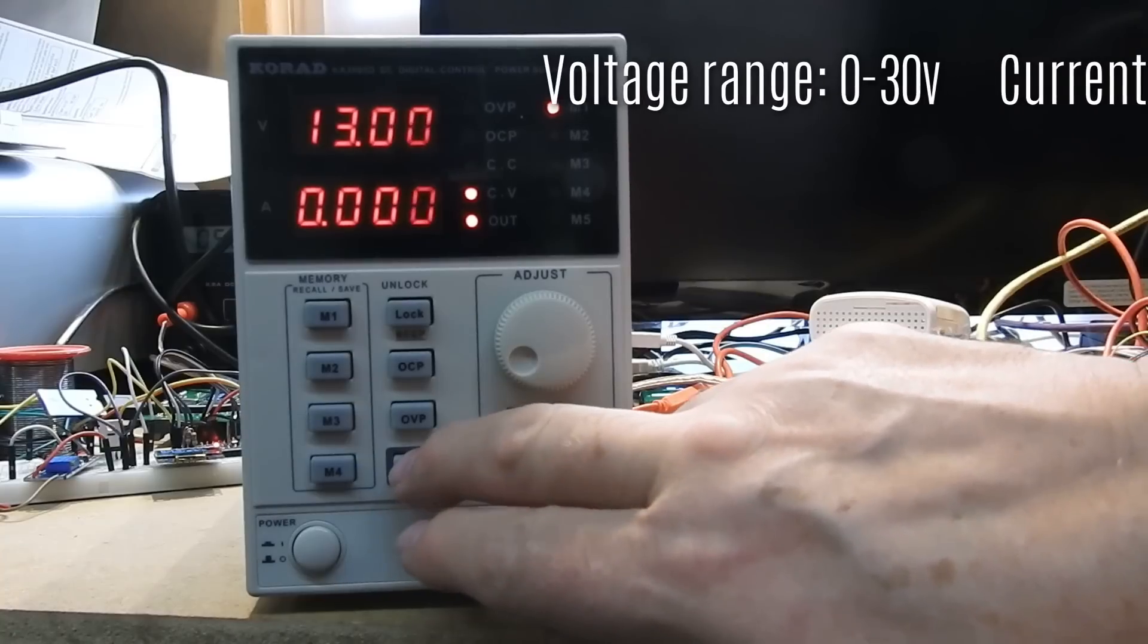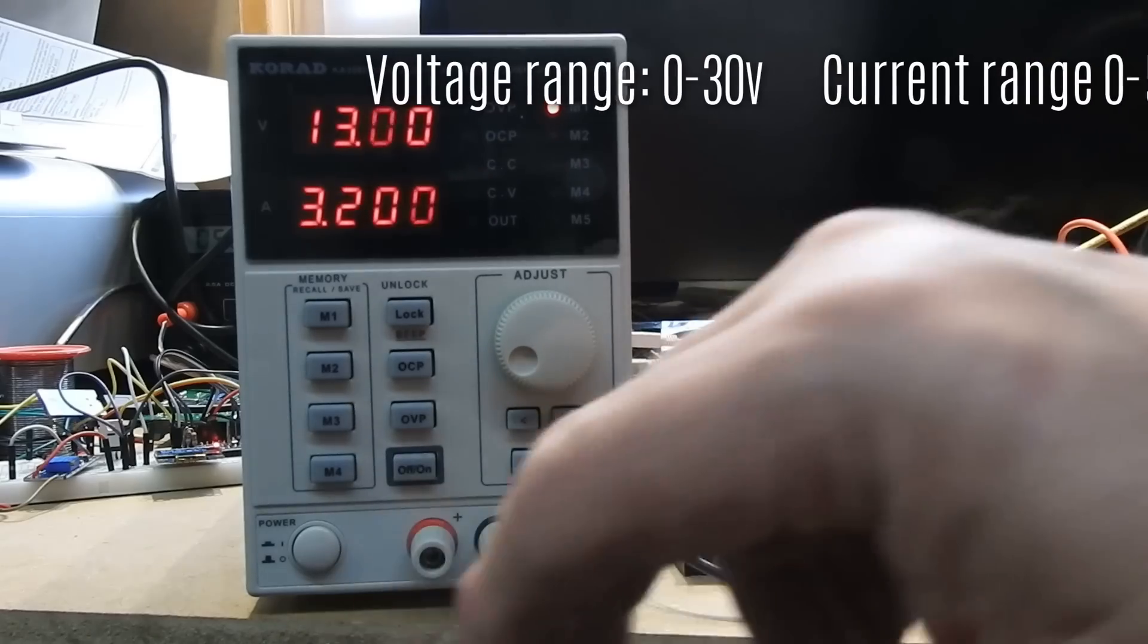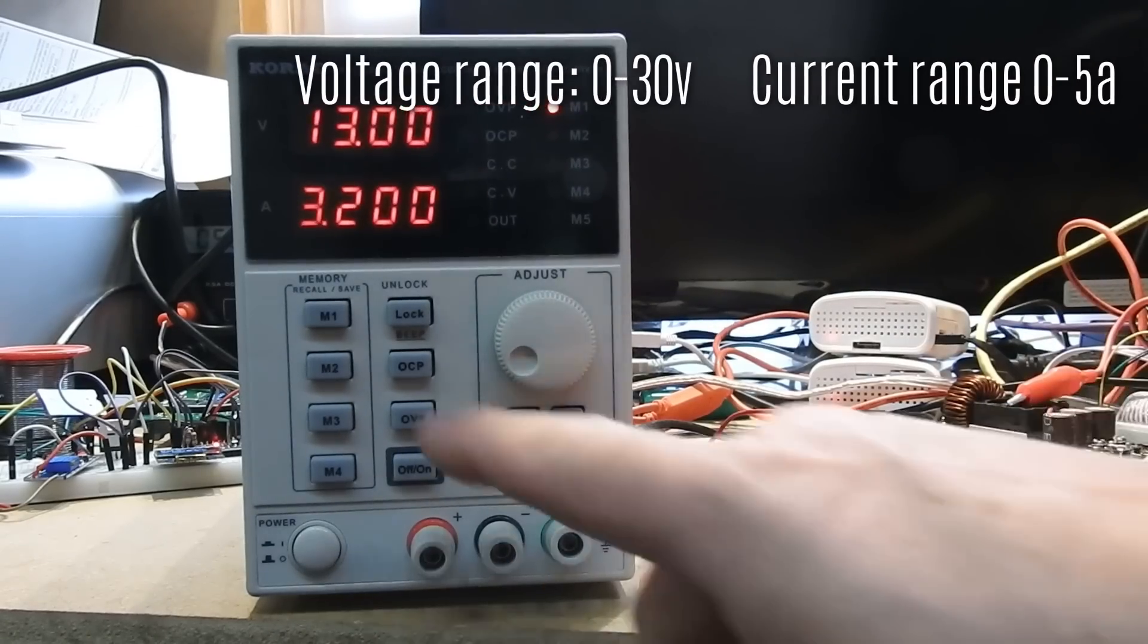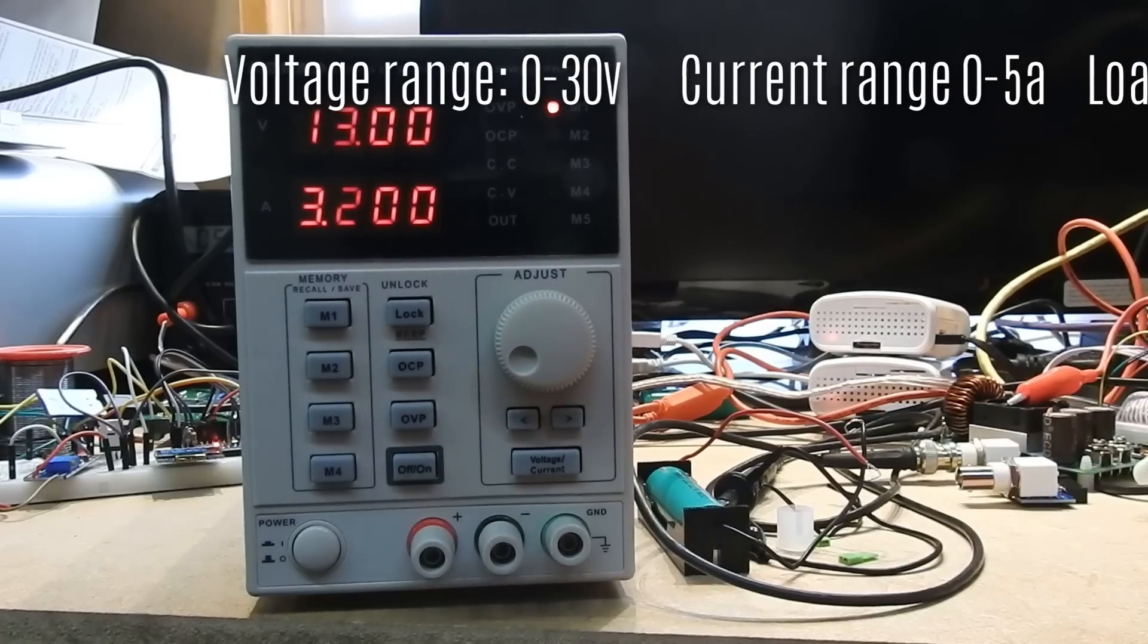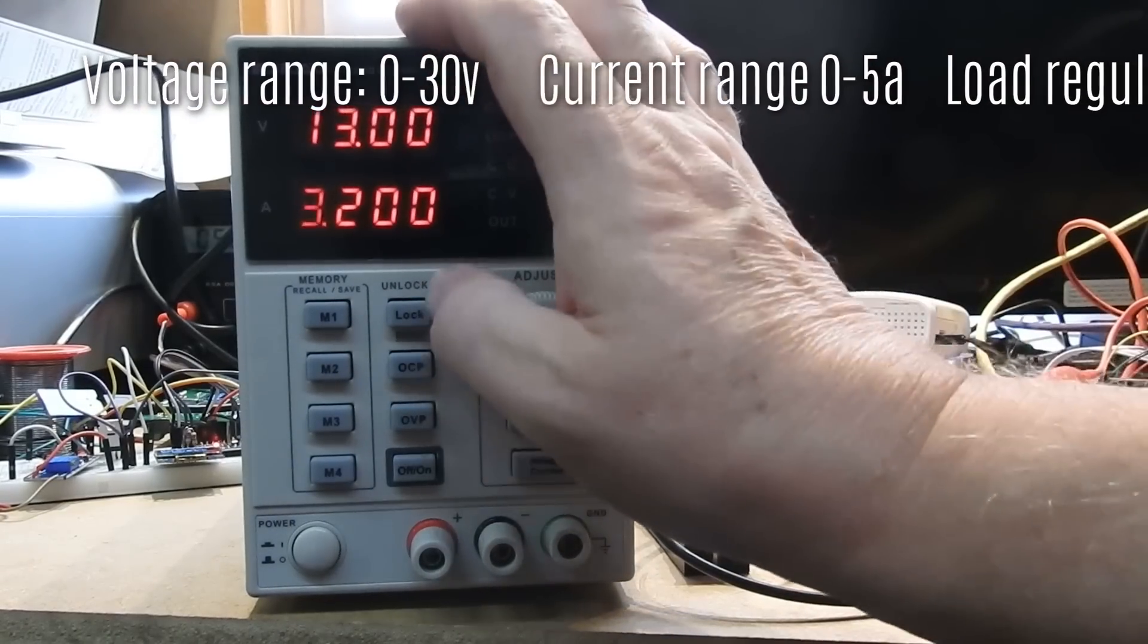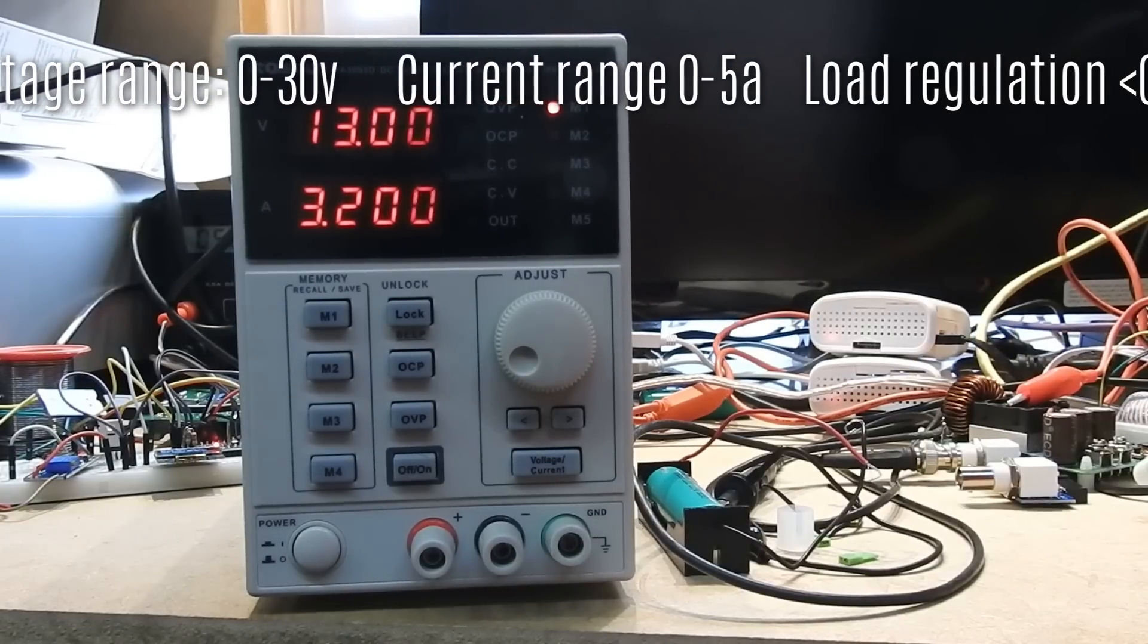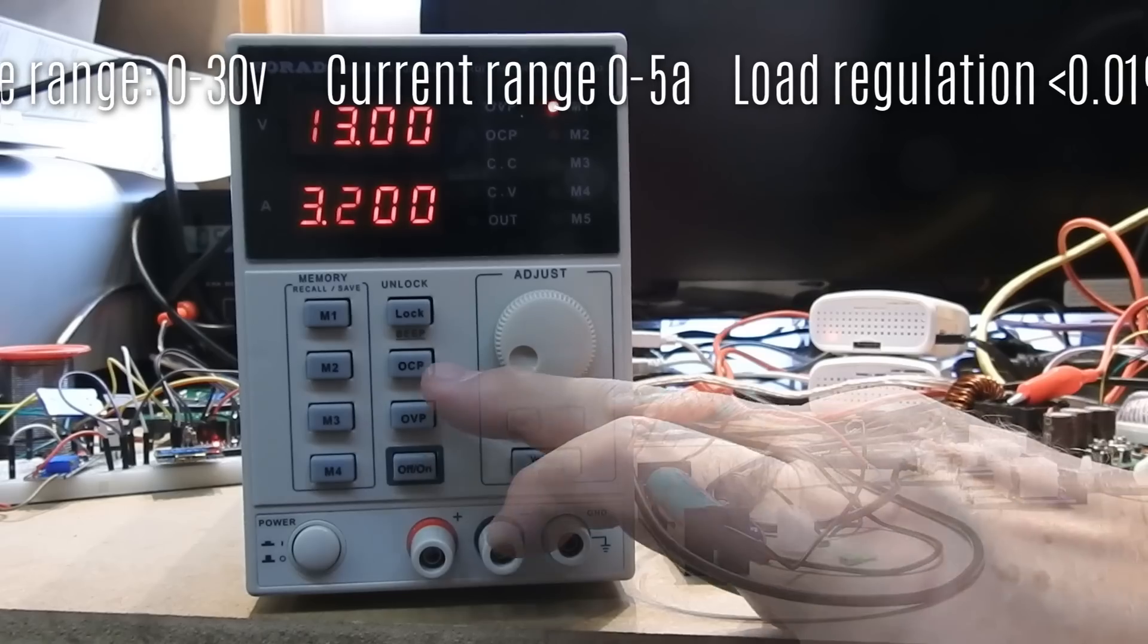Now we need to figure out what the rest of these buttons are for. Well, that one there, the bottom right, is output on and off. As against turning the unit on and off, you can turn the output on and off. The top button is simply lockout to prevent accidentally changing the voltage.